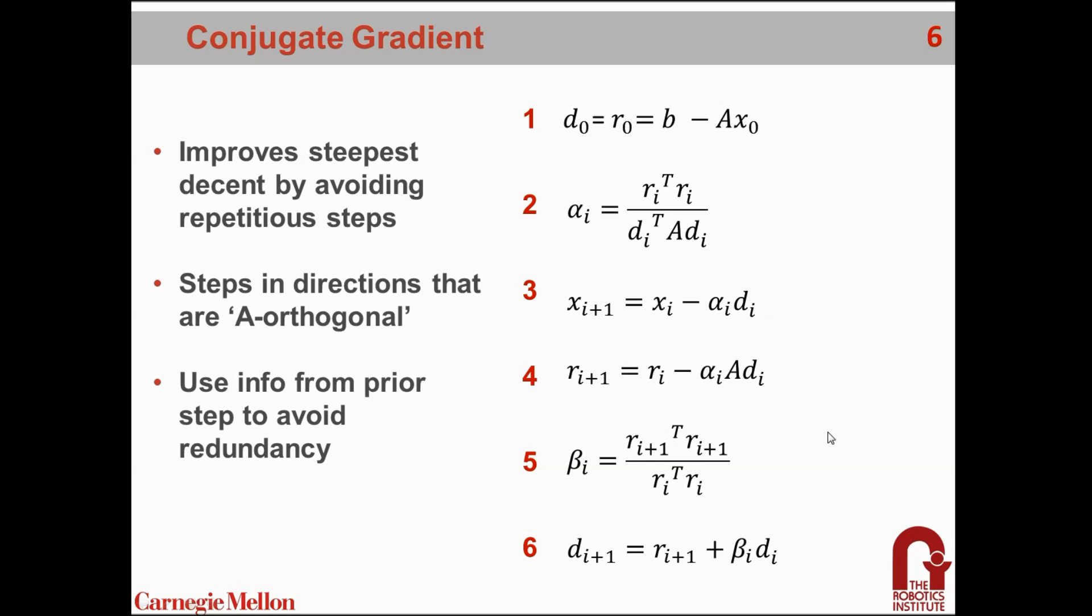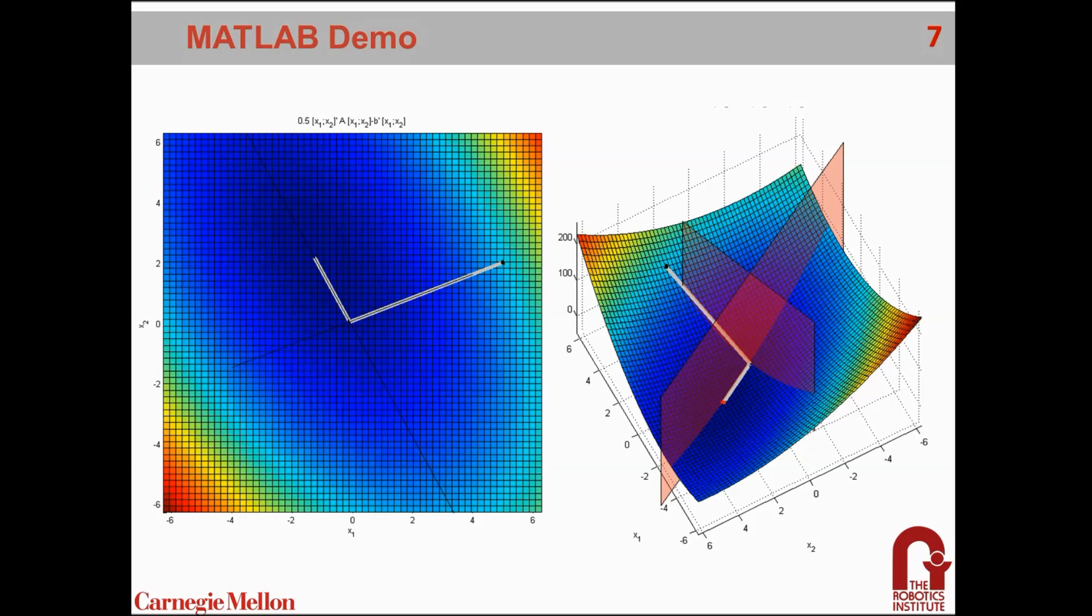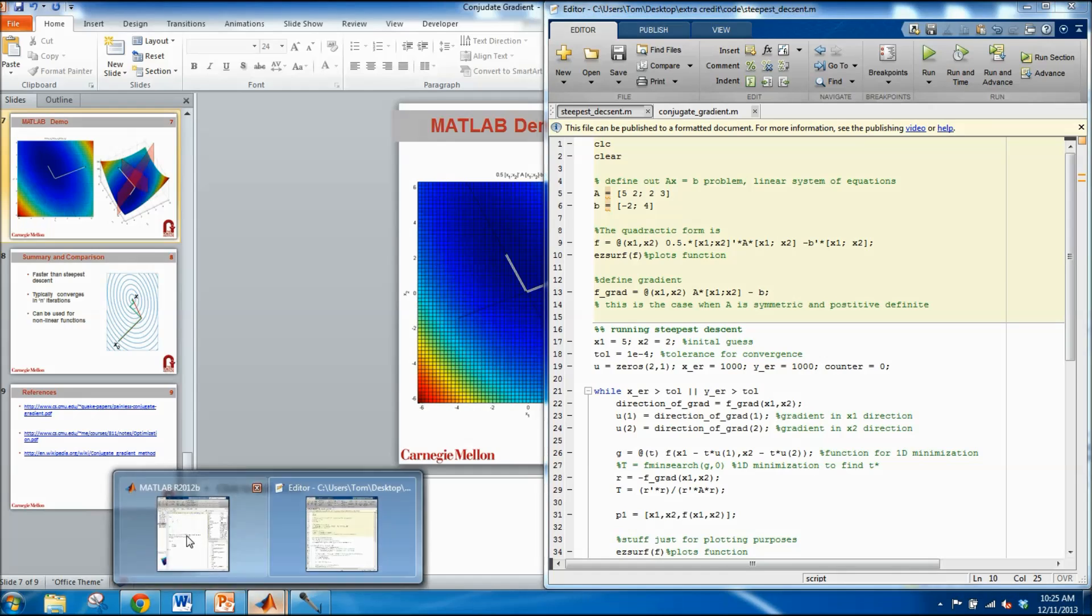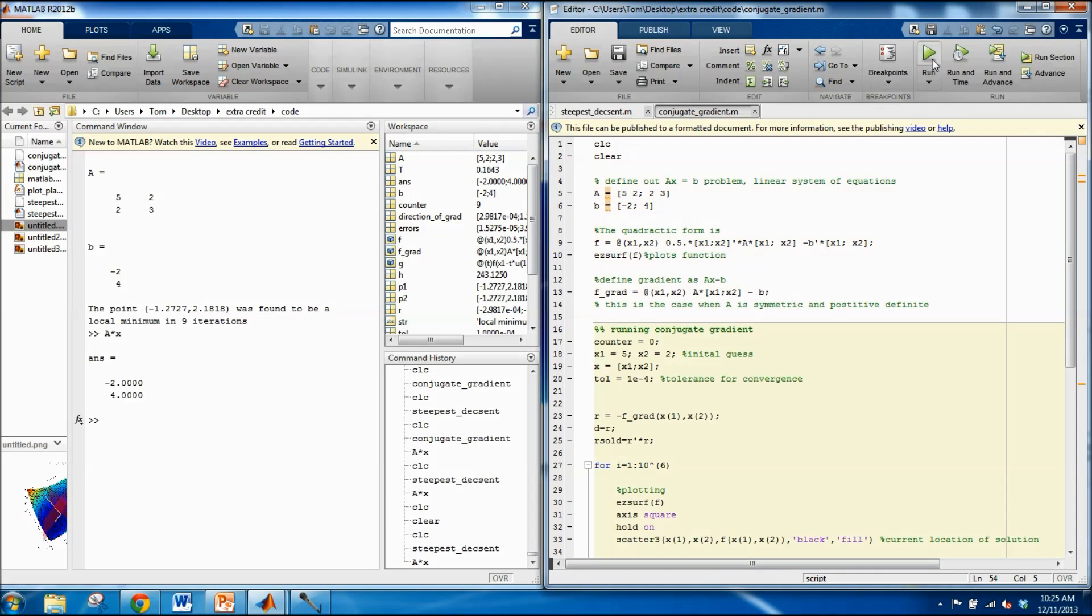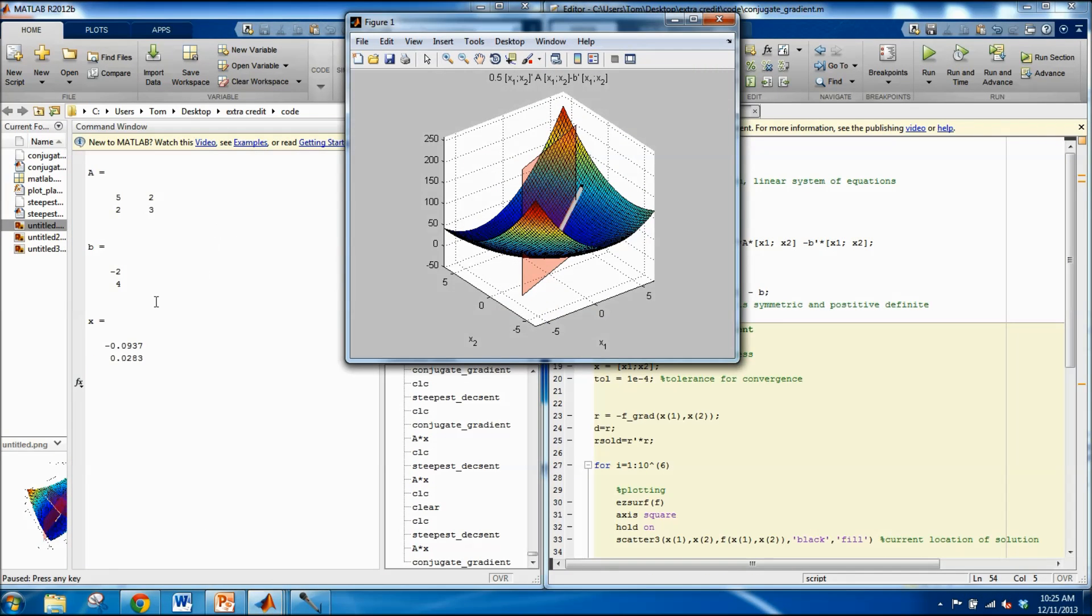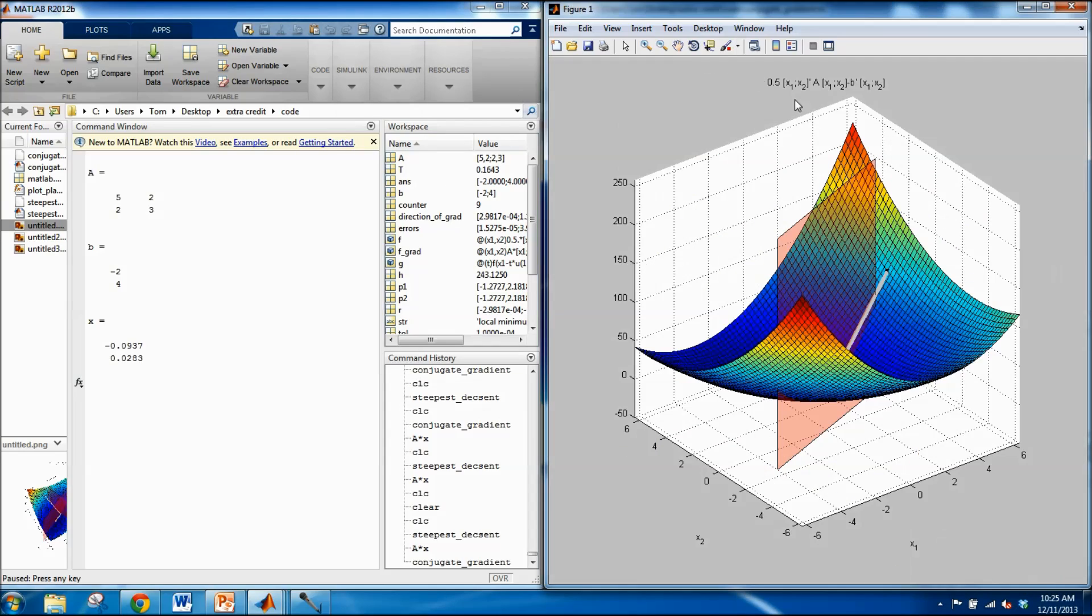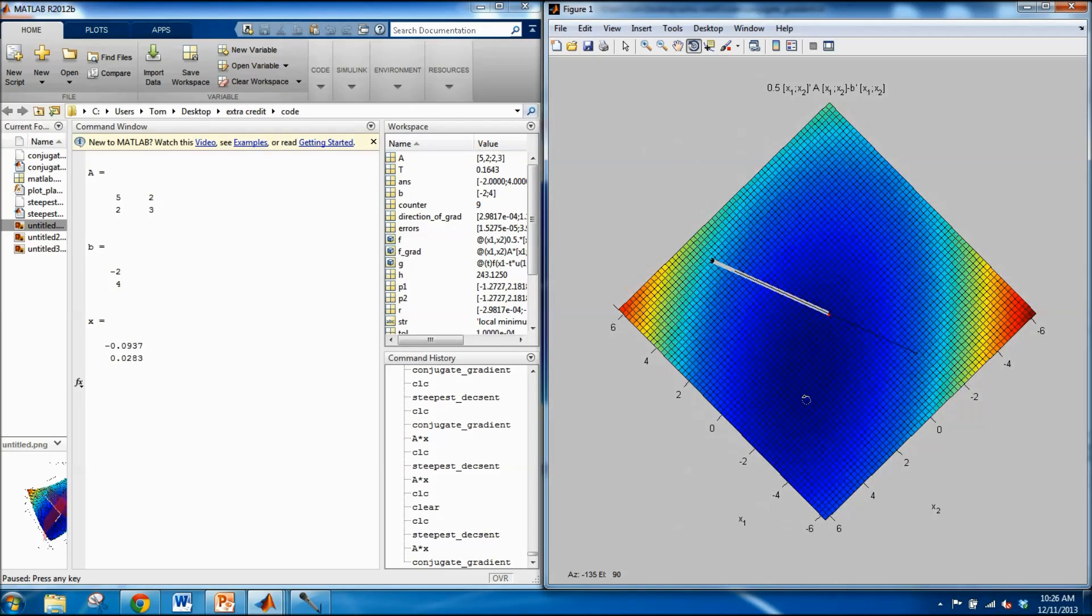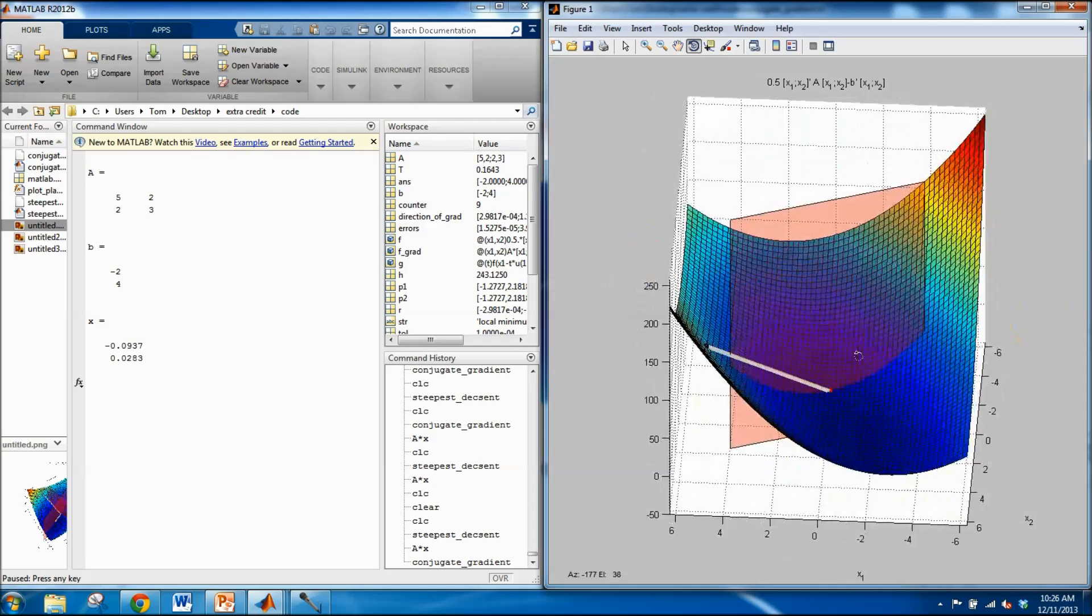This turns out to be a pretty powerful tool in optimization techniques. Let's go back to the same MATLAB demo and now run conjugate gradient. We have the same problem here. We have the same initial guess point up here. You can see the first step looks about the same.